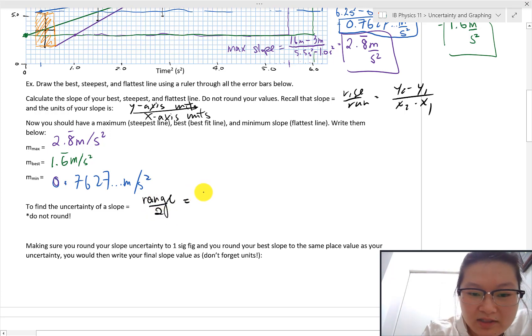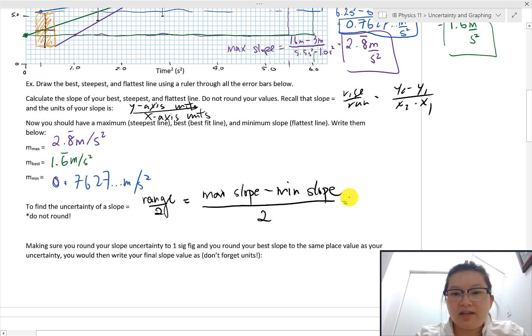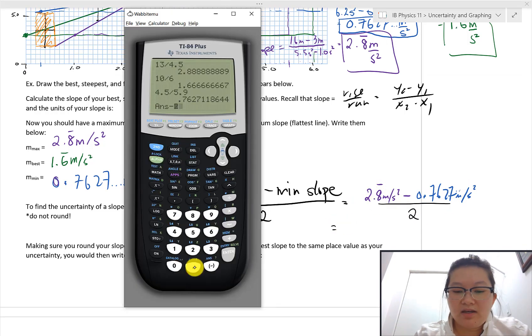And in other words, it's your max slope minus your min slope and all of that divided by two. So then now I'm going to, let's calculate that right now. And I'm going to put that in my calculator.